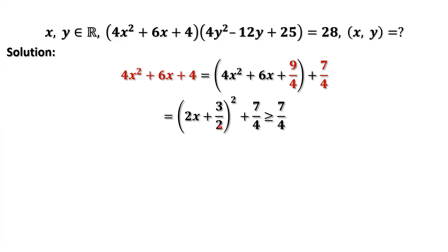Similarly, we can repeat the same procedure to the second factor. 4y squared minus 12y plus 25 equals 4y squared minus 12y plus 9 then plus 16. Here 25 equals 9 plus 16. This part is a complete square, which is 2y minus 3 then squared, then plus 16.